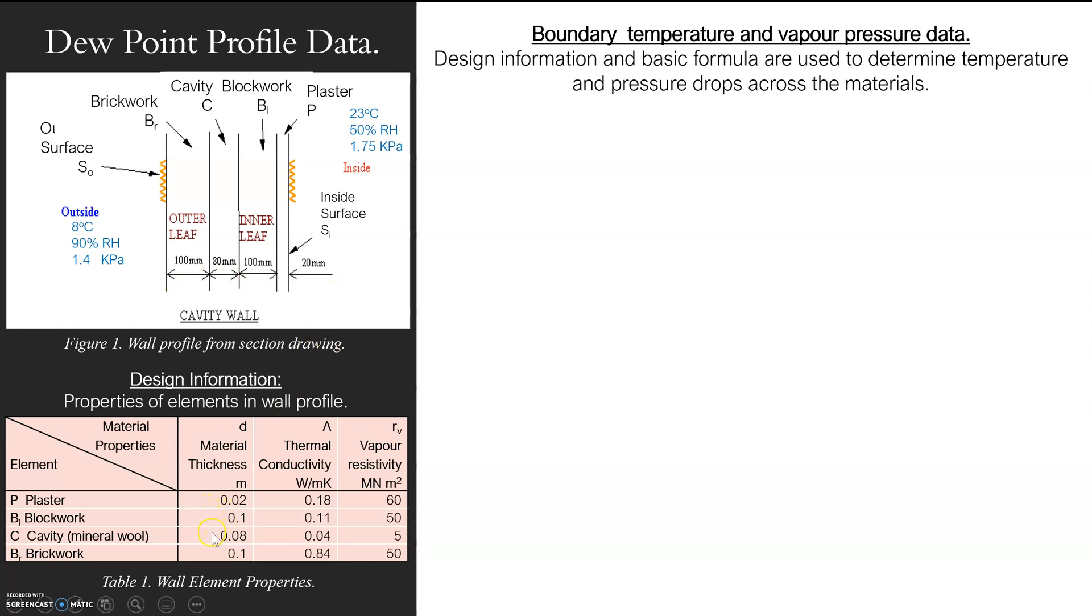And then I've just written it there. Plaster work in meters, block work, cavity, brick work in meters, not in millimeters or centimeters. Because as you can see, conductivity is watts per meter Kelvin and vapor resistivity is per meter squared.